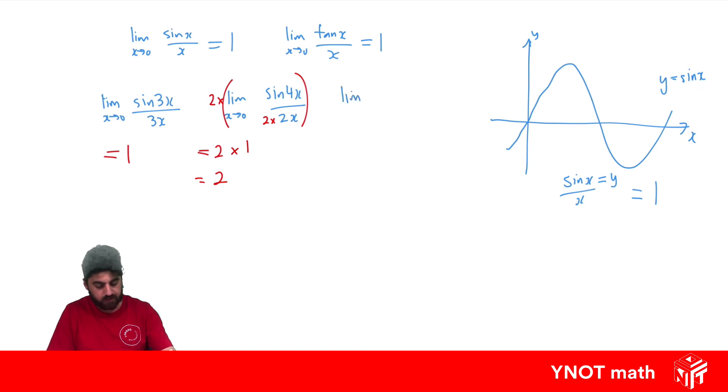What about the limit as x approaches 0 of tan 3x over 6x? Well, again these angles aren't the same, but we can manipulate this a little bit. If we write it as the limit as x approaches 0 of tan 3x over 2 times 3x, then we can take that 2 outside the limit as a half in the denominator. So then we get the limit as x approaches 0 of tan 3x over 3x, and that's going to be a half times 1, so we get a half as the answer.